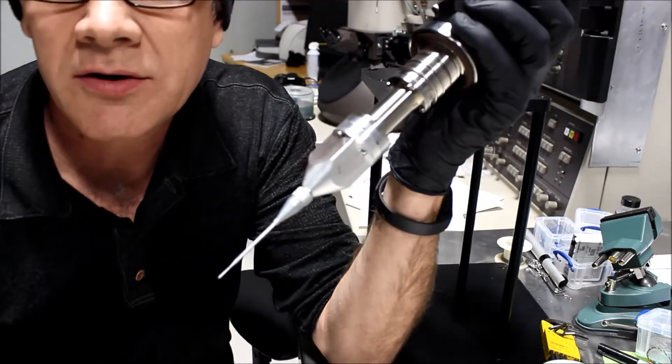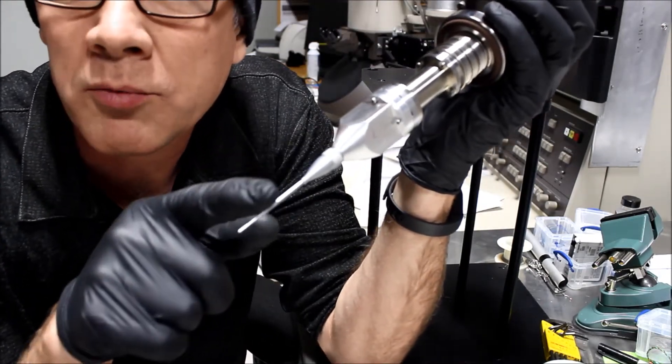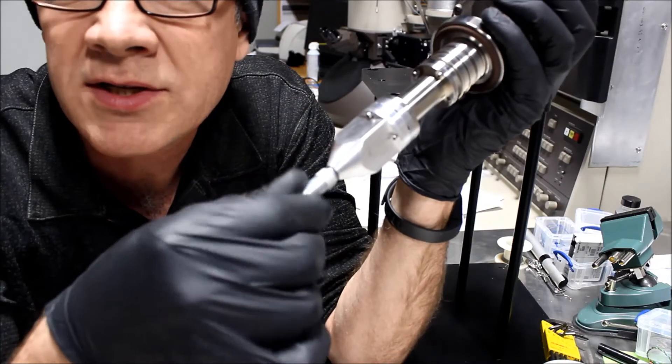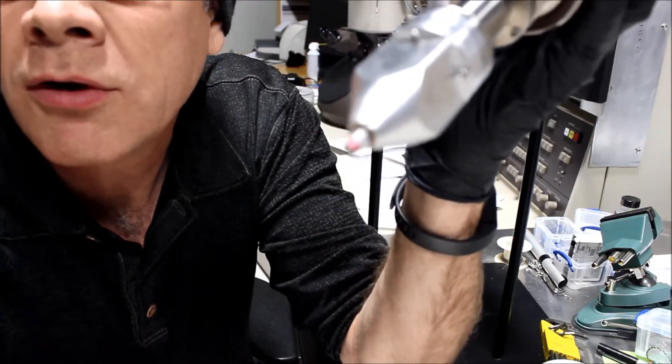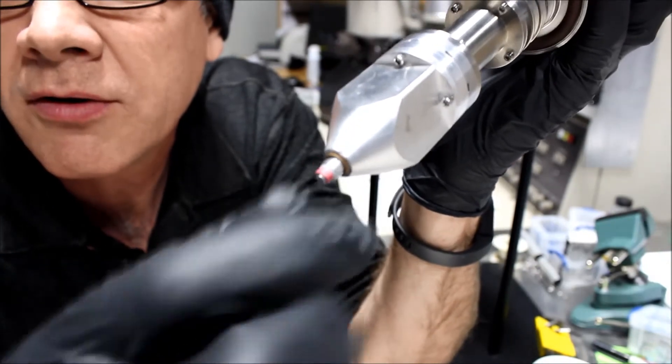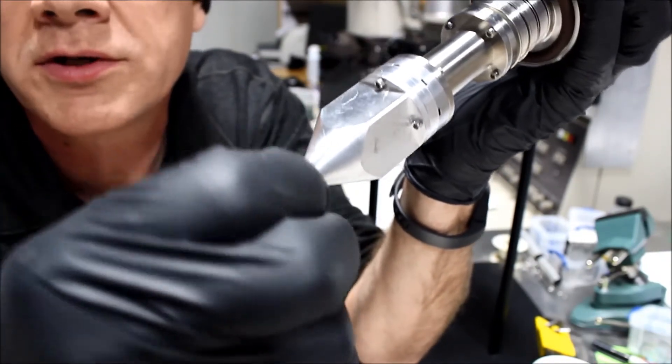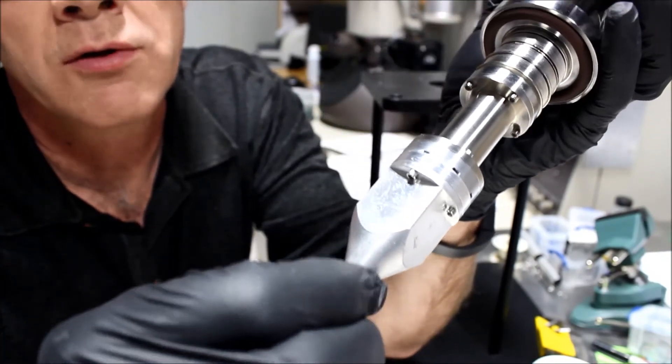Now on this end we can remove the needle. Okay, that's easy enough. Now we can remove the little flow control aperture on the end, turning that counterclockwise, and we don't want to lose the little washer that holds it there.